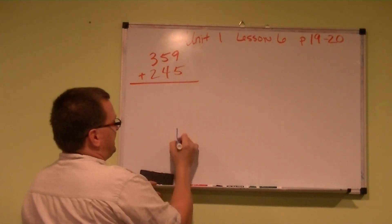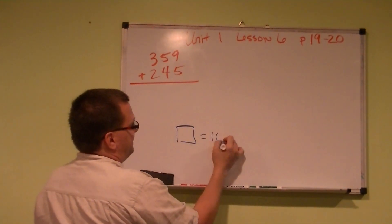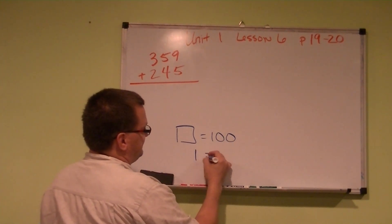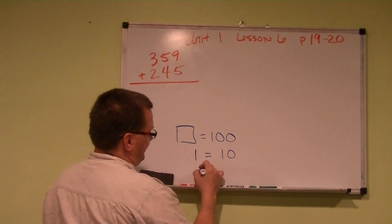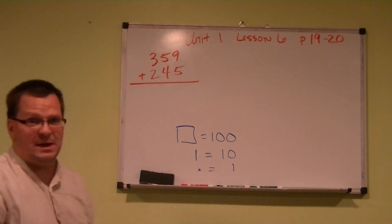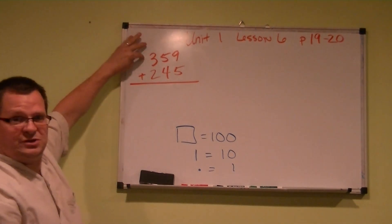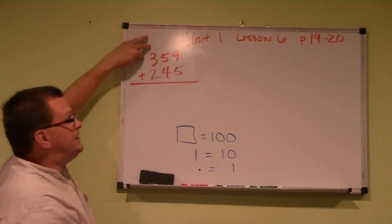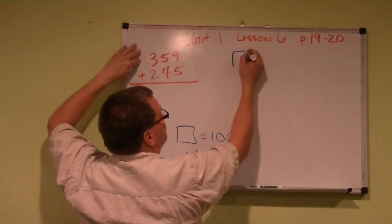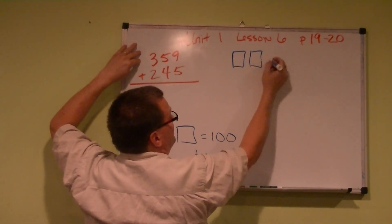So using the proof method, don't forget the big boxes equal 100, the lines equal 10, and the dots equal 1. Keep that in mind because how many hundreds do we have here? We have 3. We're going to make 3 big boxes: 1, 2, 3.